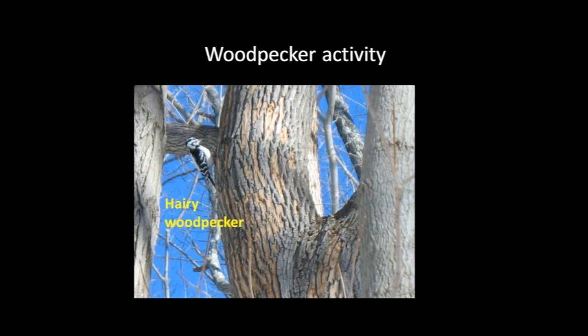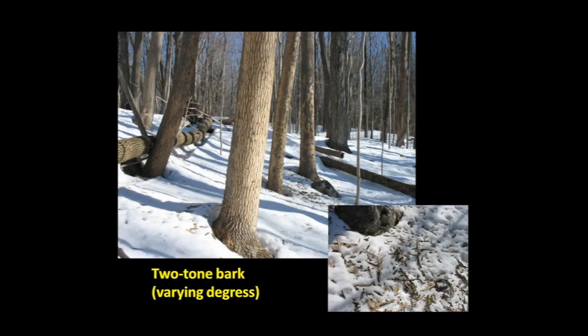Another sign is woodpecker activity. They are searching for the larvae, the grubs underneath the bark, and pecking holes in their search and scraping off parts of the bark. So you are seeing a two-toned appearance because of their activity. This is a shot taken in Bethany showing varying degrees of the two-toned bark. There are strips of bark that land on the ground because of the woodpecker activity — something to look out for while walking on your property.